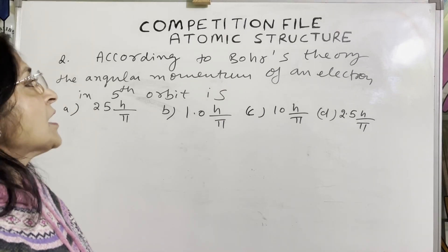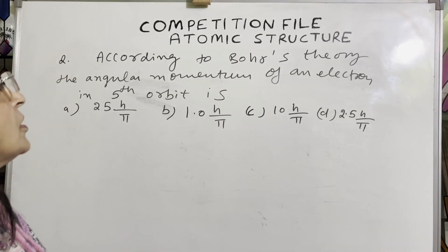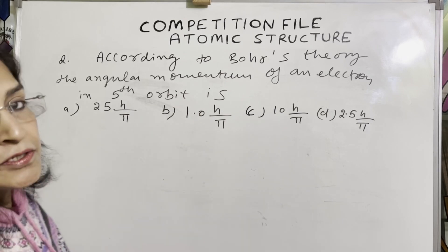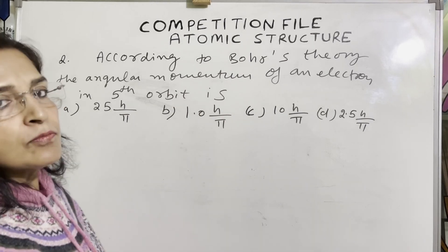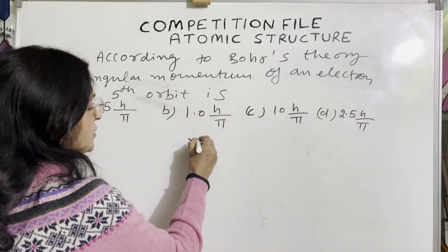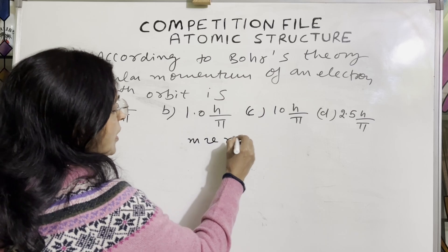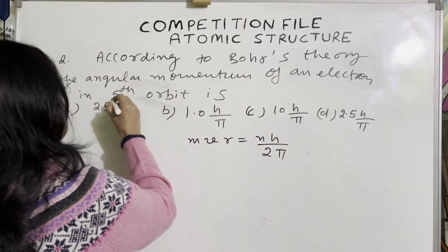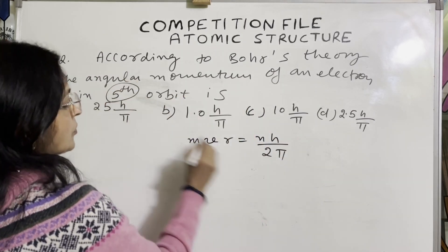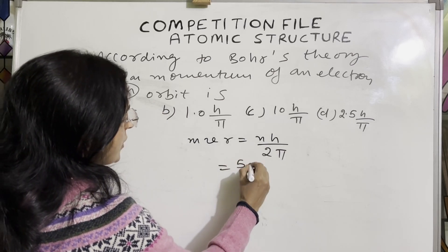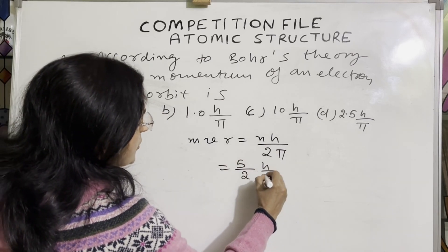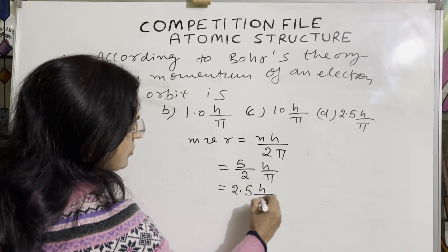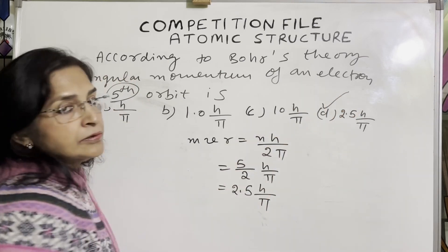Next question: According to Bohr's theory, the angular momentum of an electron in the 5th orbit is? The formula is MVR = nh/2π. For the 5th orbit, N = 5, so angular momentum = 5h/2π = 2.5h/π. The answer is D.